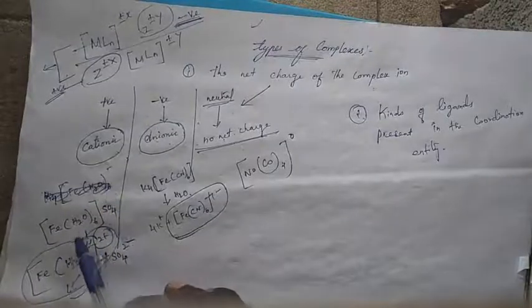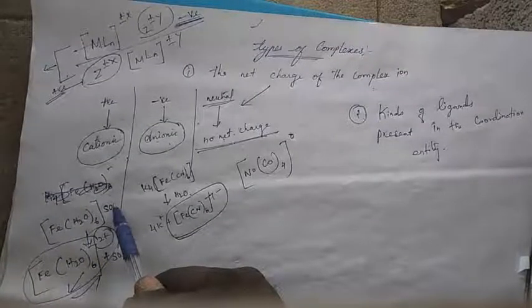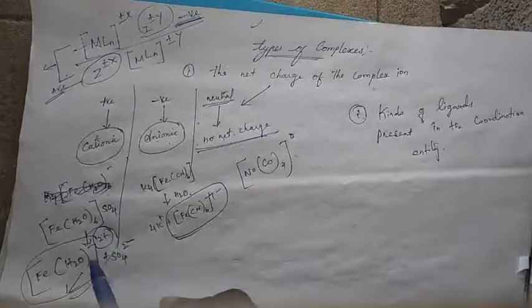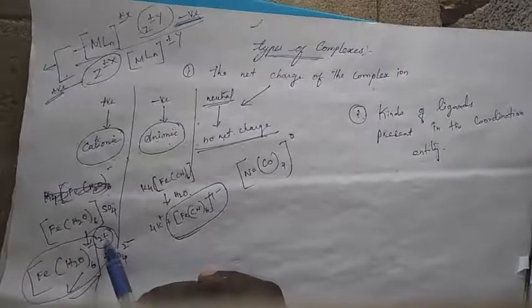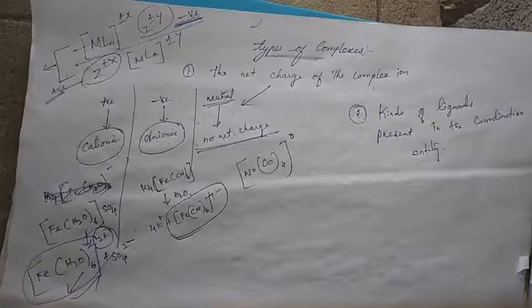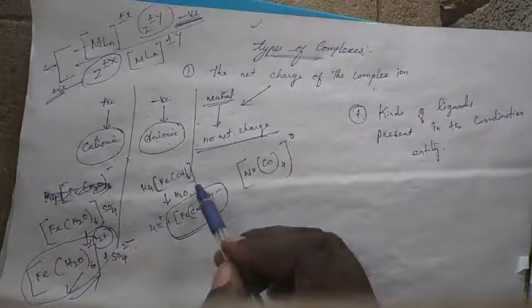For example, Fe[H2O6]SO4. On hydrolysis of this coordination compound, it splits to Fe[H2O6] 2+ and SO4 2−. The coordination sphere Fe[H2O6] has a positive net charge of 2+, therefore it is a cationic complex.